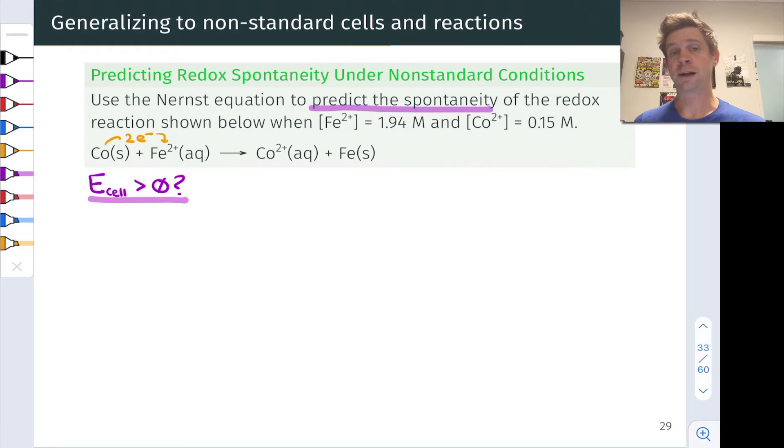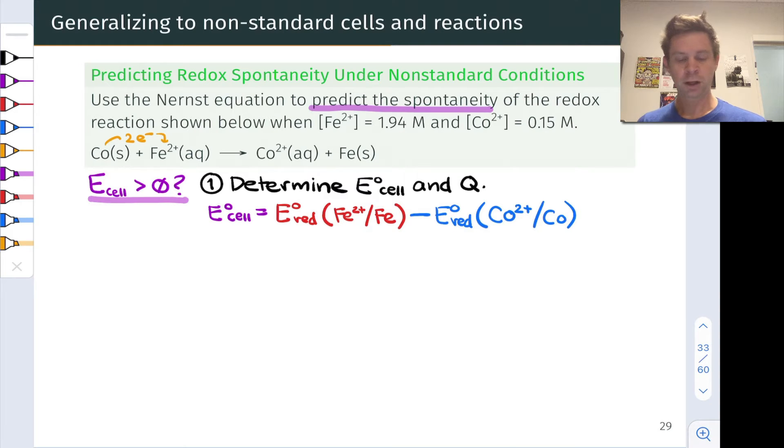The first step, if we're going to apply the Nernst equation, is to figure out the standard cell potential. We've already done this using the standard reduction potentials in the anode and cathode. We're going to need the value of the reaction quotient based on these given concentrations, Fe2+ molarity and Co2+ molarity. So the standard cell potential is the reduction potential for the reduction process, here that's Fe2+ being reduced to iron 0.